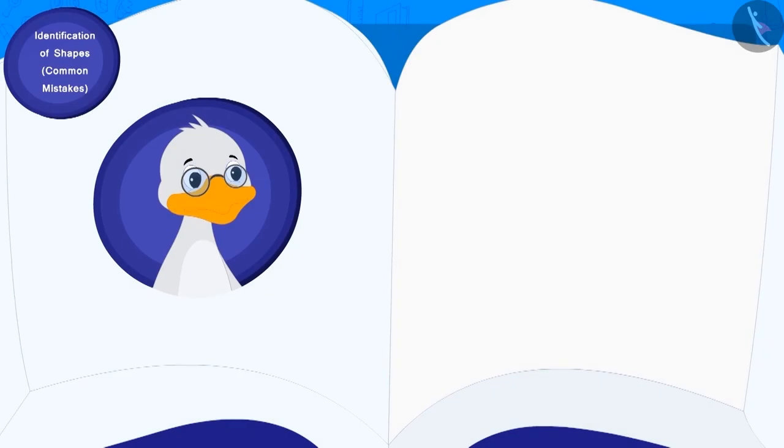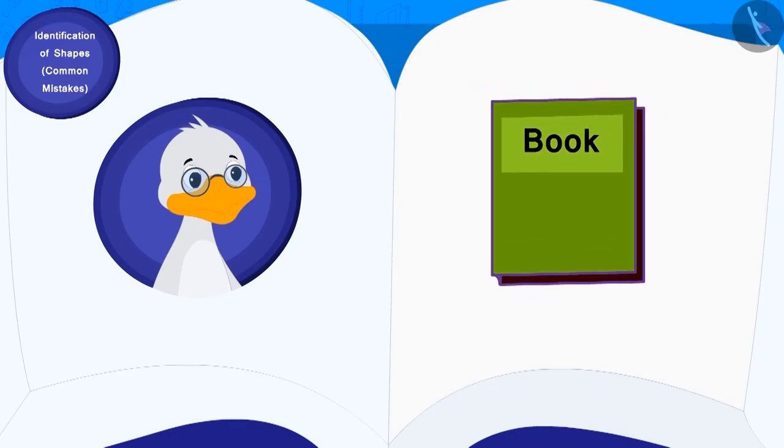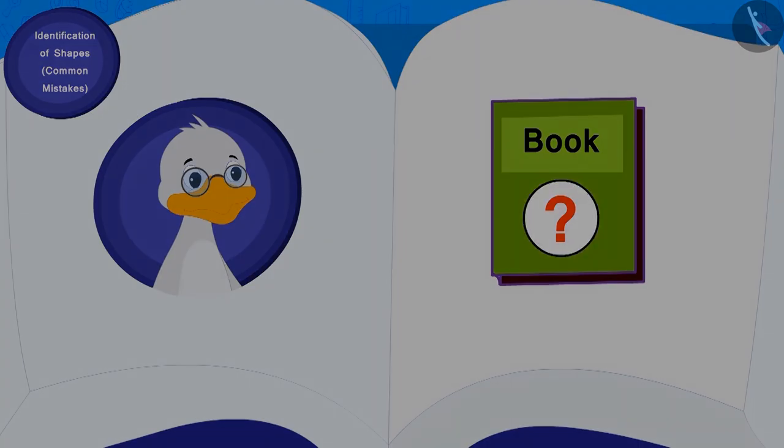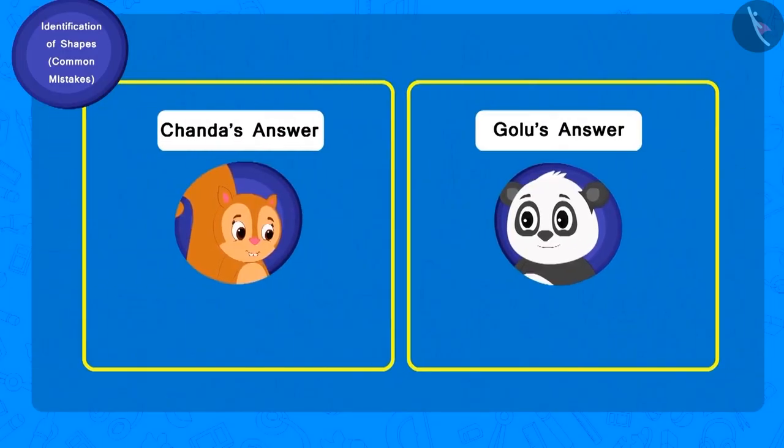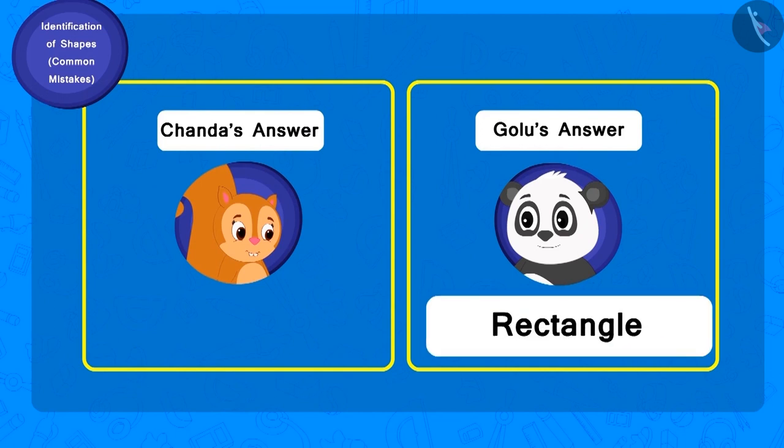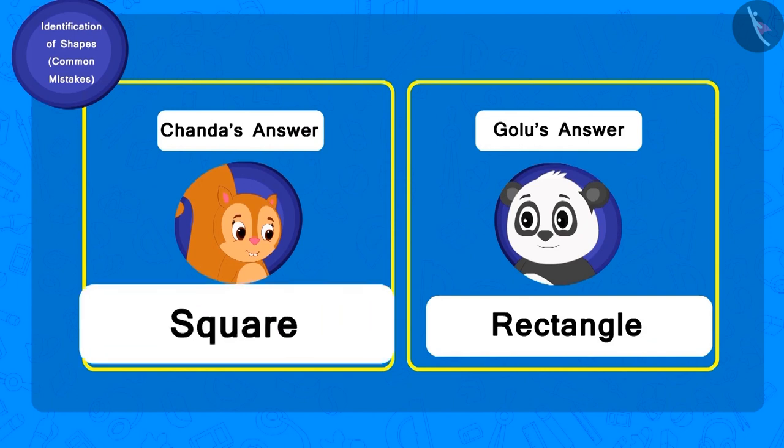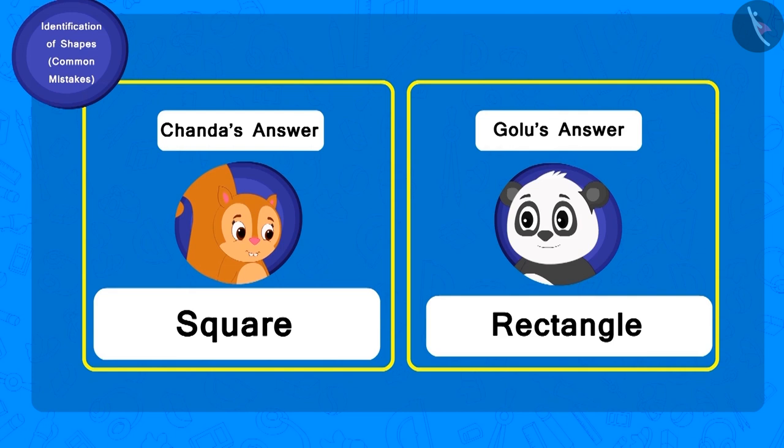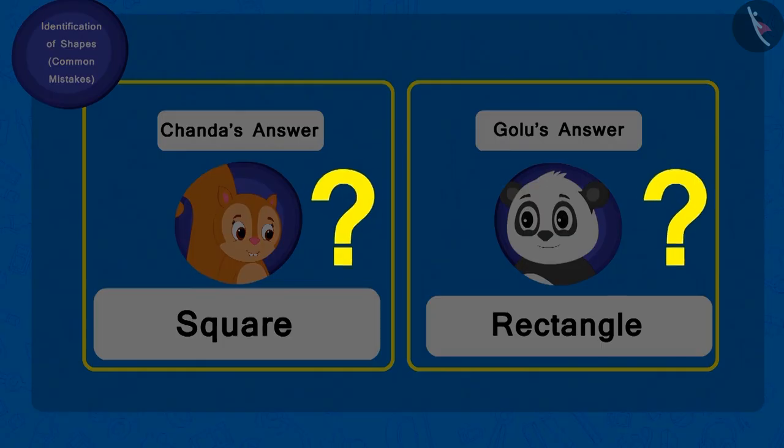Now Chacha showed a book and asked, what shape is it? Golu immediately wrote rectangle as his answer. And Chanda wrote square. Children, can you tell whose answer is correct?